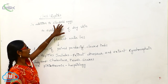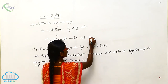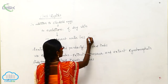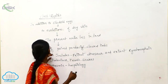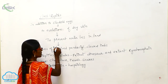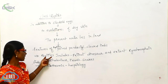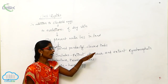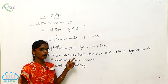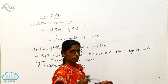In addition to cleidoic eggs, the evolution of dry skin to prevent water loss in aquatic conditions. Features of the reptiles are paired pentadactyl clawed limbs, and reptiles include extant dinosaurs, extant rhynchocephalia, crocodilians, lizards and snakes. The study about poikilothermic animals is known as herpetology.